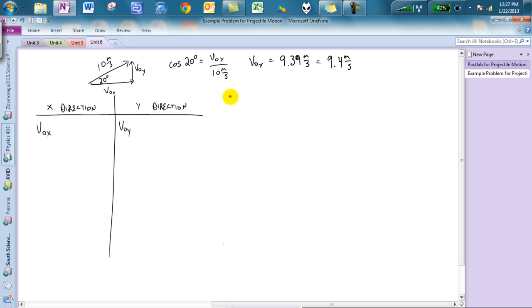In order to get v0y, we do the sine of 20 degrees, and that is equal to v0y over 10 meters per second. And to solve for this, again, we do the same thing, 10 times the sine of 20 degrees, and we get 3.42 meters per second. So v0x, we can say we solved for 9.4 meters per second. V0y is equal to 3.42 meters per second.